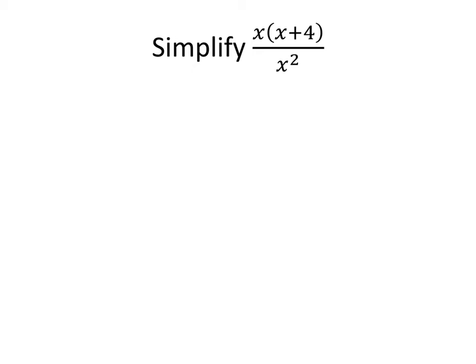So here's the wrong way to do this problem. We can multiply out the top and get x squared plus 4x divided by x squared. And then we could say, hey, there's an x squared on the top and there's an x squared on the bottom — let's cross them out. And then maybe we're not exactly sure what happens. Maybe they just disappear, maybe we just get 4x, or maybe there's a 1. But that's simply not right. We don't want to just cross things out.